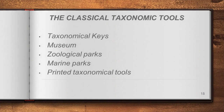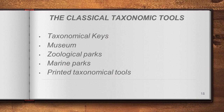Classical taxonomical tools include taxonomical keys, museum, zoological park, marine park, and printed taxonomical tools. These are tools we have been following since ancestral periods. Let us see each one in detail.